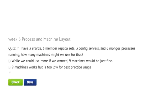Here's a quiz for us. We have three shards, each of which is a three-member replica set, three config servers, and six mongos processes running. How many machines might we want for this to reach this goal? And possible answers. We could use more if we wanted. Nine machines would be just fine. Or nine machines works, but it's too low for best practice usage.